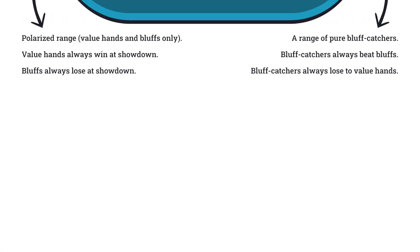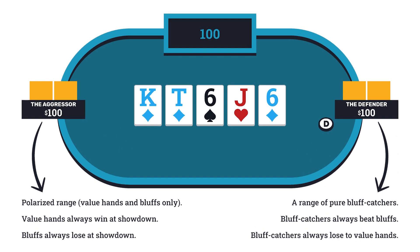Simply put, the perfect polarization model explores a heads-up situation on the river. There's $100 in the middle and $100 effective for both players. The aggressor is out of position and has a polarized range — just value hands and bluffs. Their value hands will always win at showdown, and their bluffs will always lose at showdown. The defender is in position with a range of pure bluff catchers: their bluff catchers always beat bluffs and always lose against the opponent's value hands. This is the perfect polarization model.